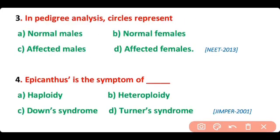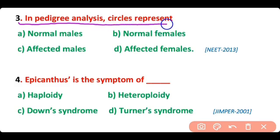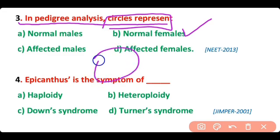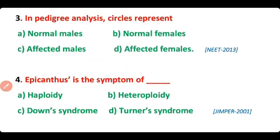Question number 3. In pedigree analysis, the circle represents the normal female. So correct answer is option B.